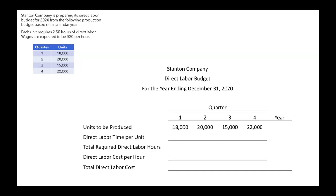Now for direct labor time per unit — how much time does it take for each unit? We were told two and a half hours of direct labor would be needed, so we can plug that in all the way across our direct labor budget as well.